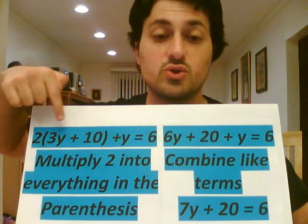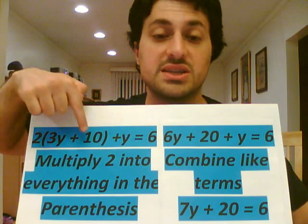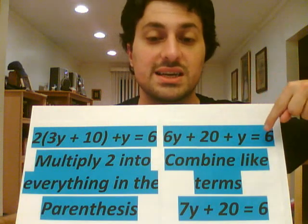Then we will multiply the 2 into everything in the parentheses, 2 times 3y and 2 times 10, which will leave us with 6y plus 20 plus y equals 6.